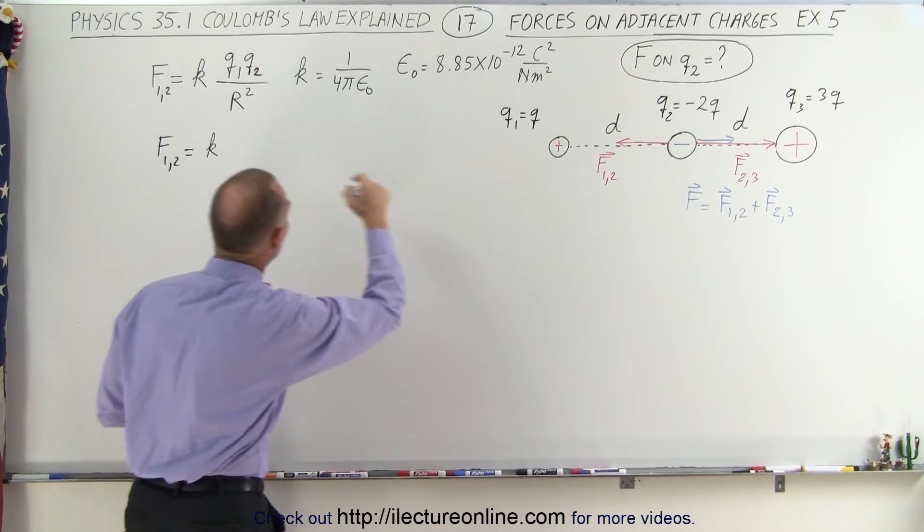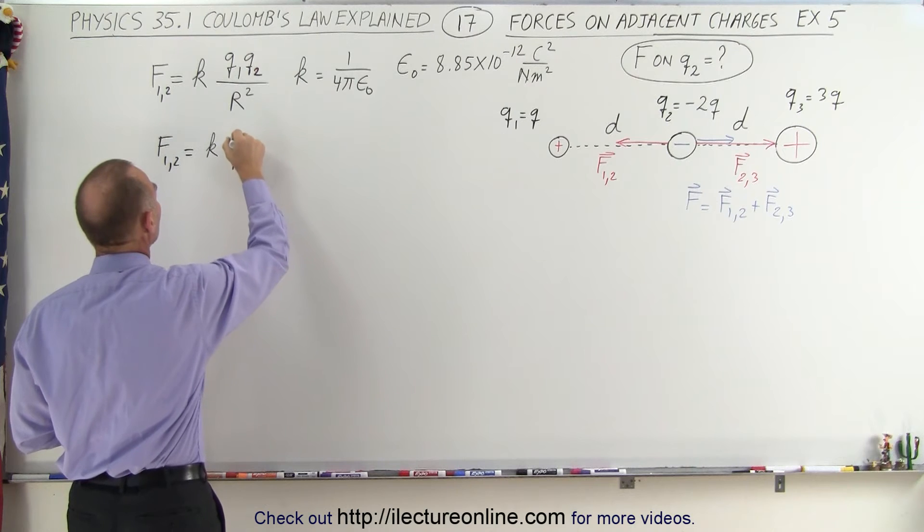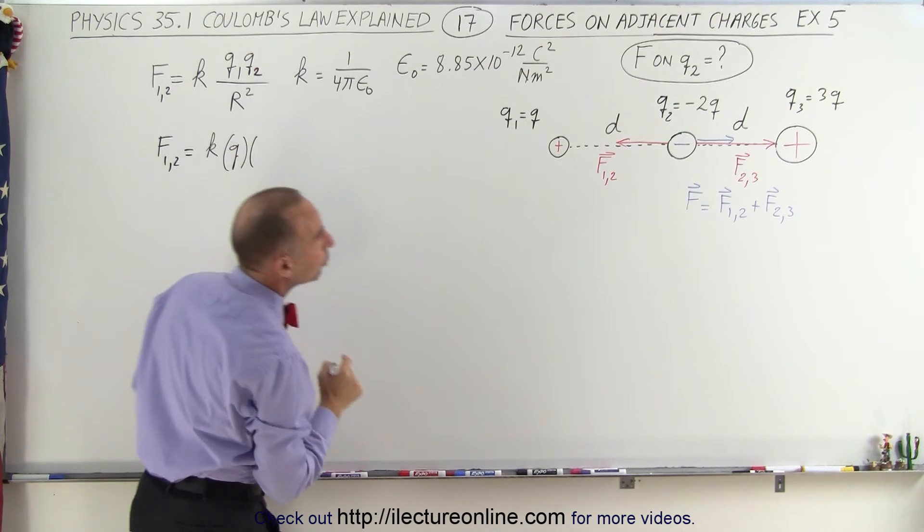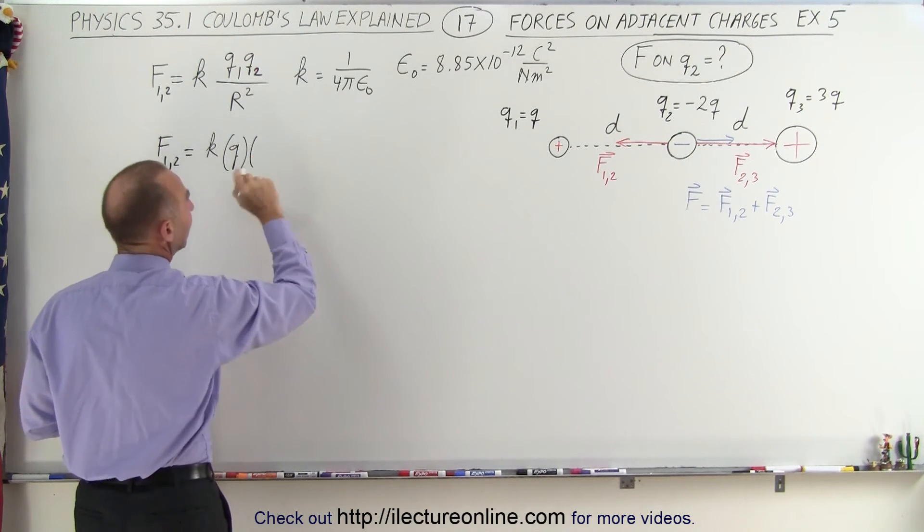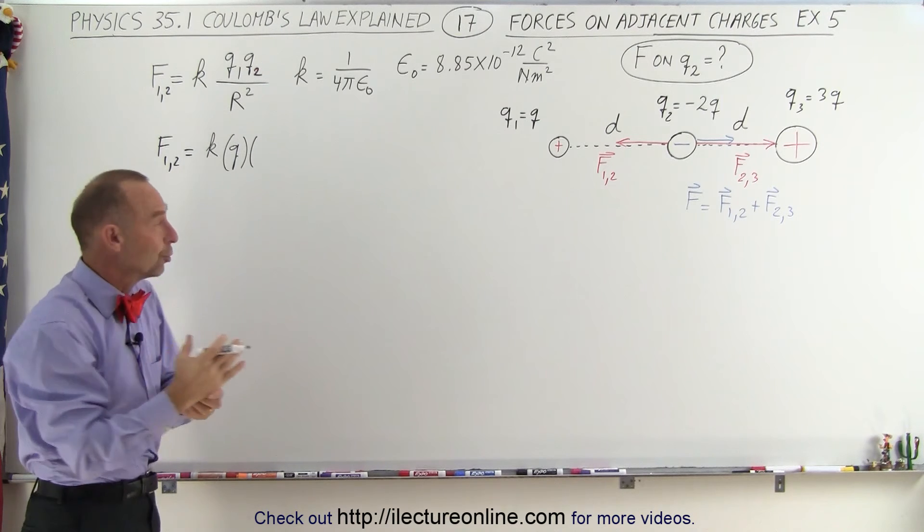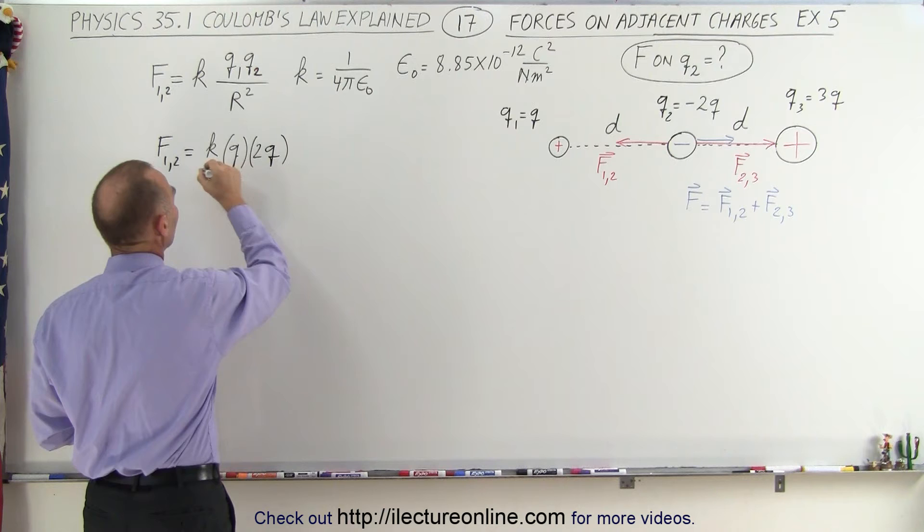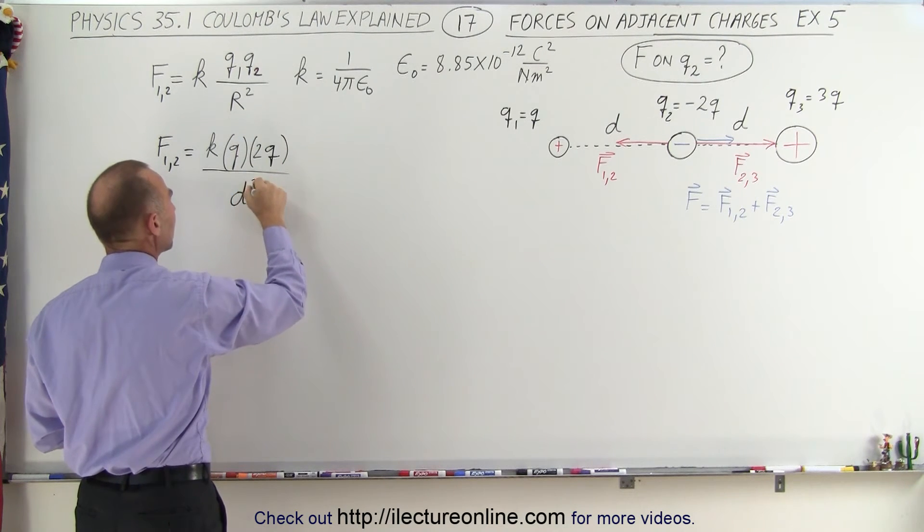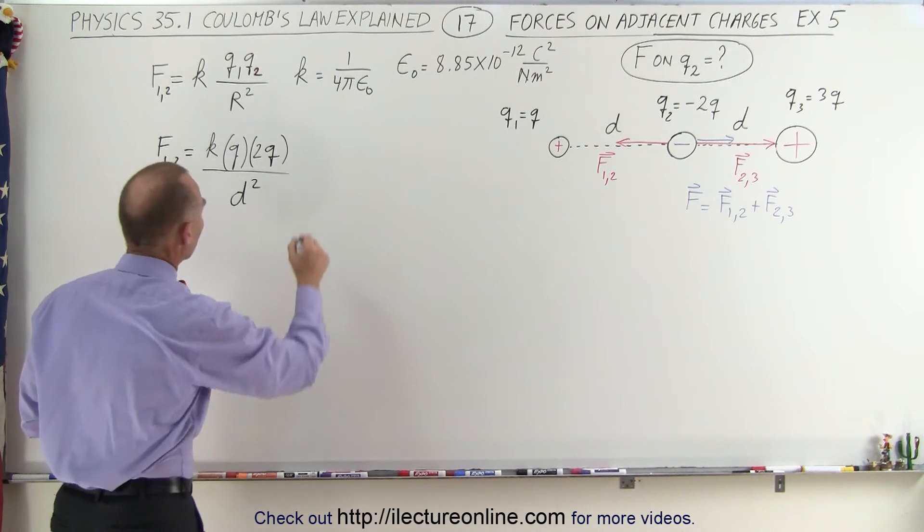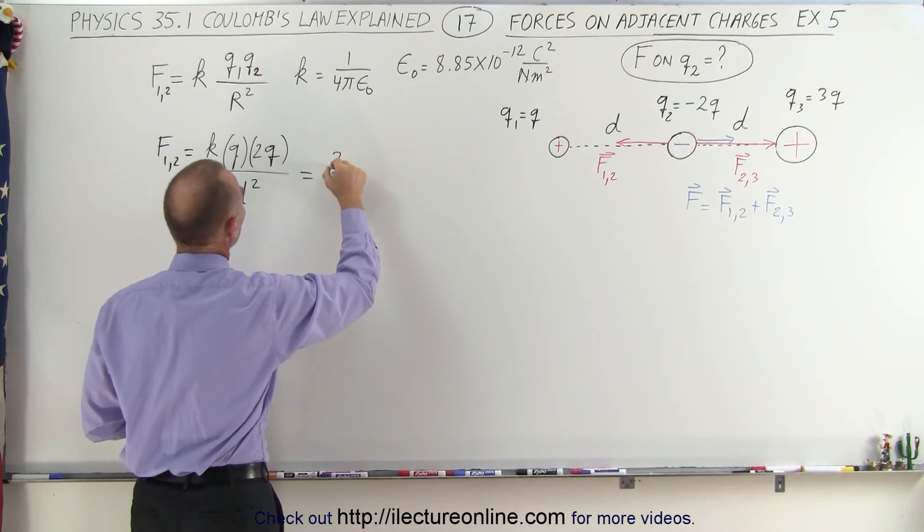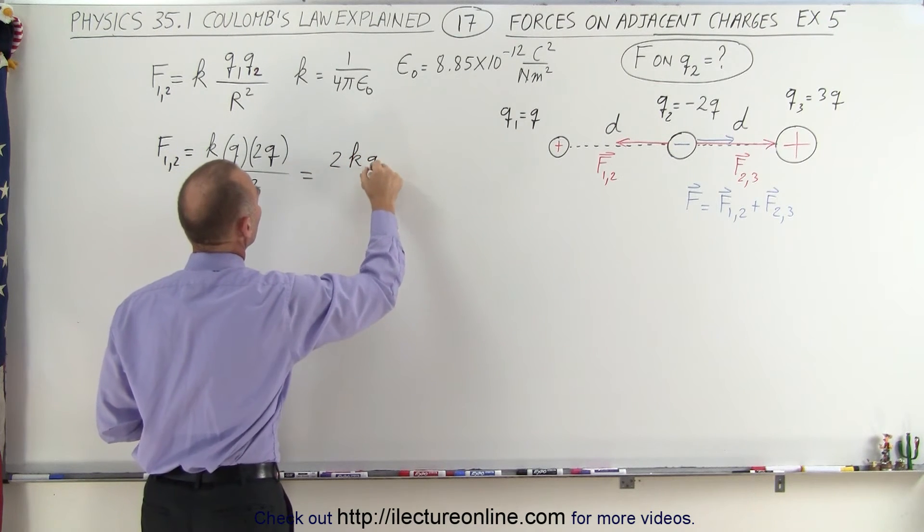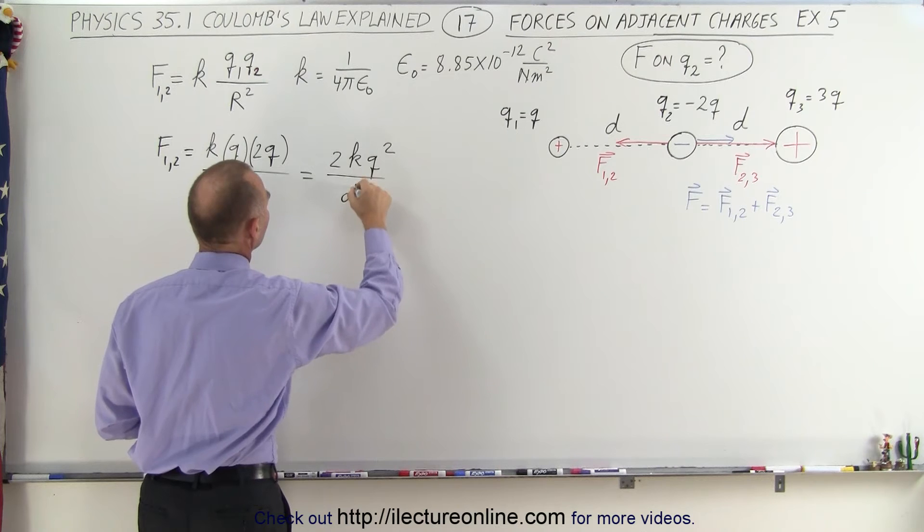times Q2, which equals 2Q. Even though it says negative 2Q, we'll put in a positive 2Q because we're only looking for the magnitude of the force, divided by D squared. When we simplify that, we get 2KQ squared divided by D squared.